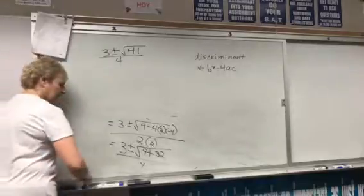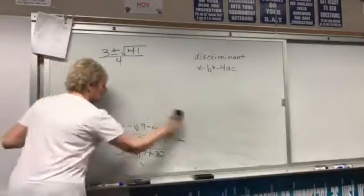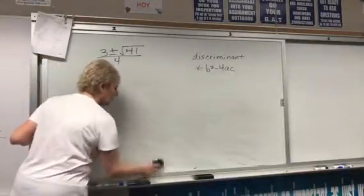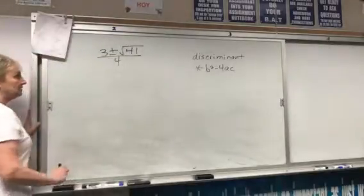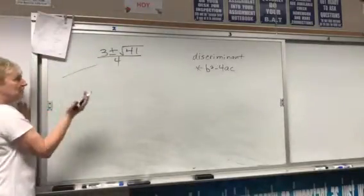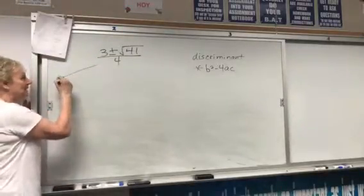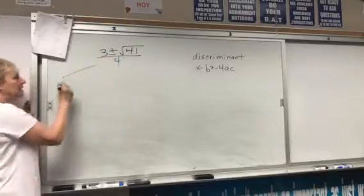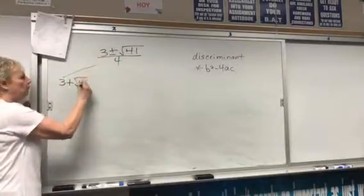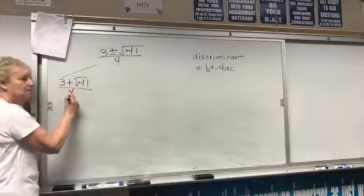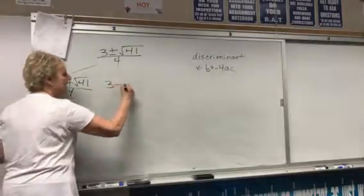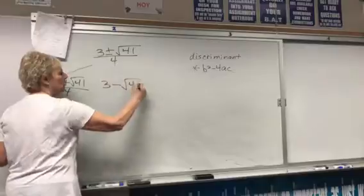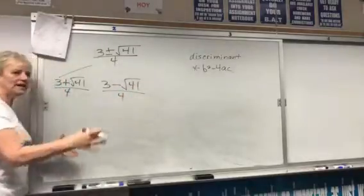So I'm going to show you every possible way you could see it on a multiple choice test. Actually, the best way, in my opinion, is to leave it as a radical and put 3 plus radical 41 over 4, and 3 minus radical 41 over 4. Two answers.